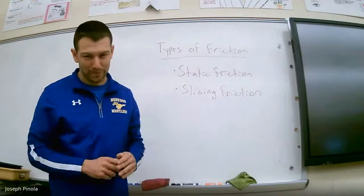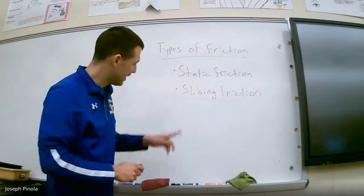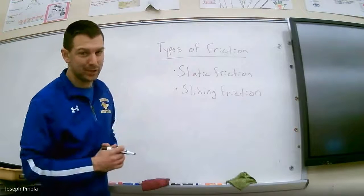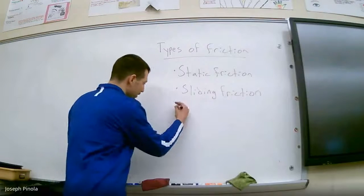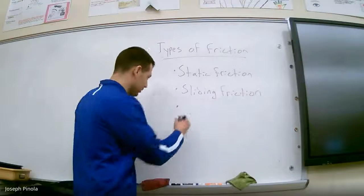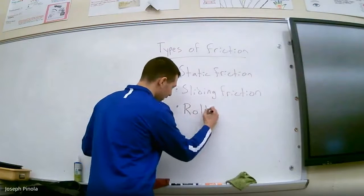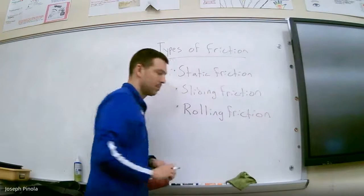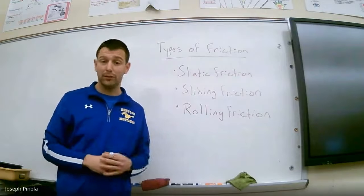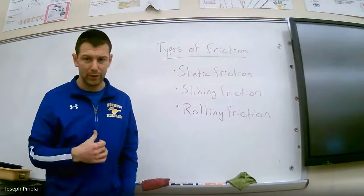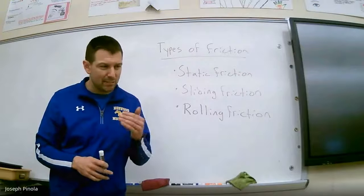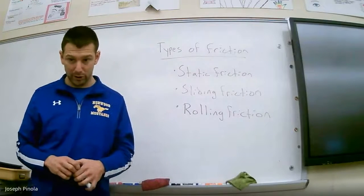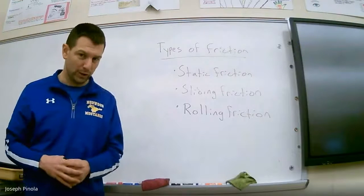There's one more type of friction to discuss—rolling friction. Like sliding friction, it acts against moving objects in the opposite direction of motion, but it acts specifically on objects with wheels. Rolling friction does basically the same thing as sliding friction, but since there are wheels on the bottom, it makes the object more likely to stay in motion.